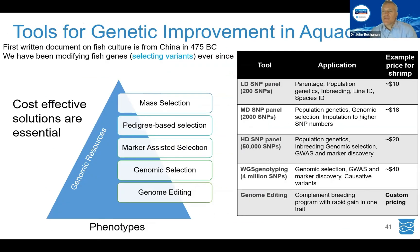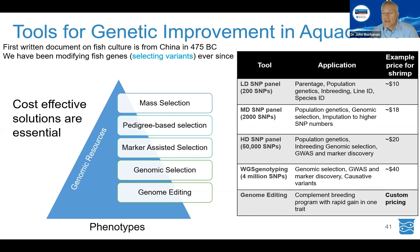To sum up: the tools for genetic improvement in aquaculture are significant. The first written document on fish culture was from China in 475 BC, domesticating carp, and we have been selecting variants ever since — initially by just looking at animals and measuring traits. In the more modern era, we look at the genome using genotyping tools to facilitate this. The next step will be creating variants specifically in the genome. All these tools will be important going forward, whether you have a mass selection program, family breeding, or more advanced technologies like genomic selection and genome editing.